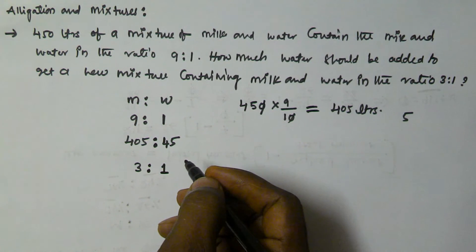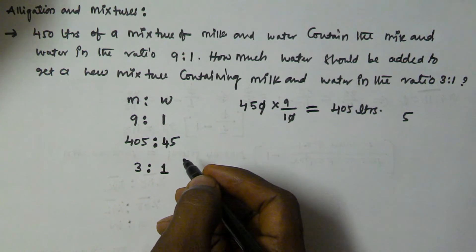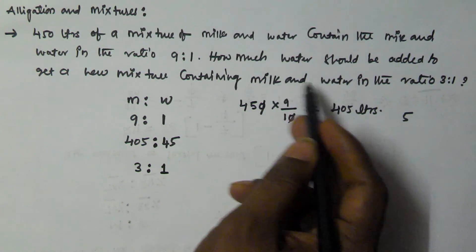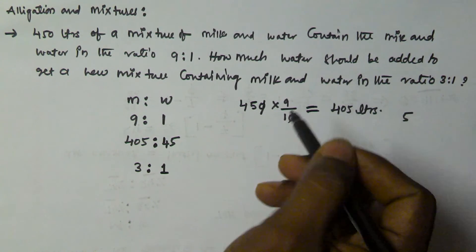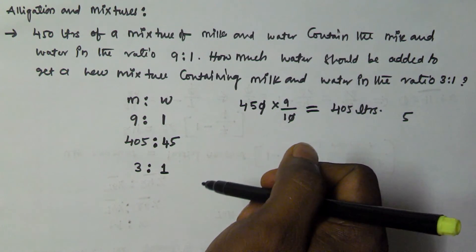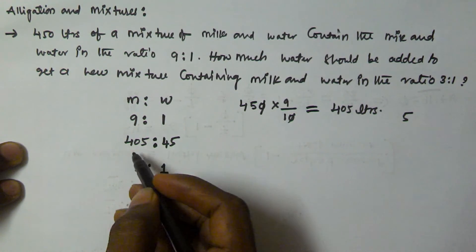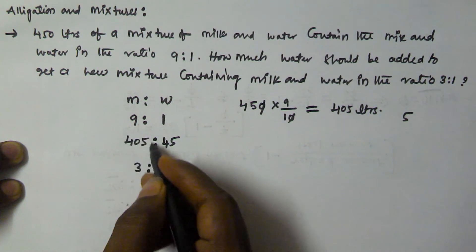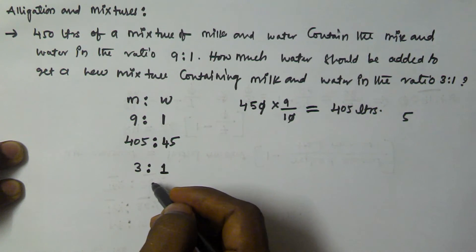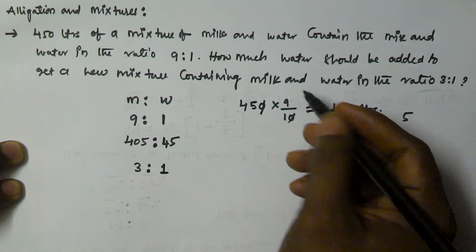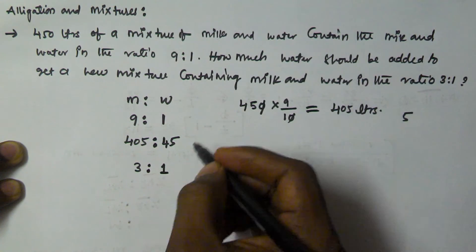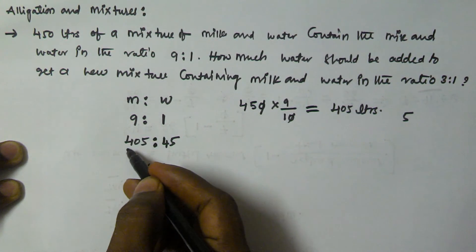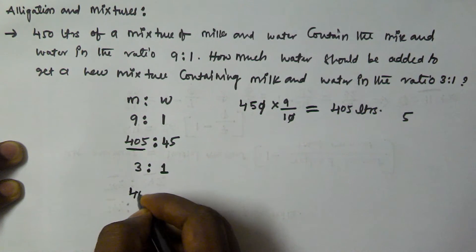We have to add water in such a way that the milk and water ratio becomes 3:1. We are going to keep the milk as constant. Because we are only adding water, the milk quantity stays the same at 405 liters.